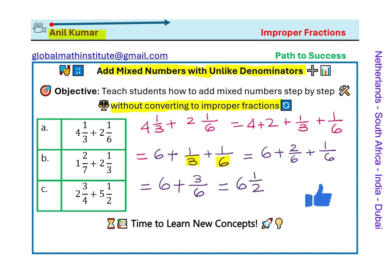So our answer becomes 6 and 1/2. Do you see how easily we have done it? This fraction could be reduced to 1/2 by dividing by 3, and we get our answer. I hope this step is absolutely clear.